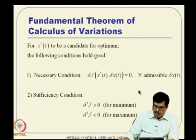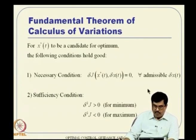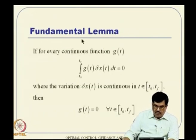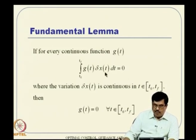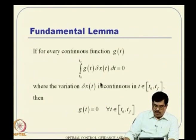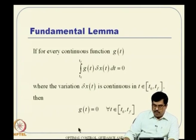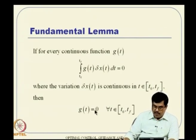We also discussed the fundamental lemma of calculus of variation, which states that for every continuous function g of t, if this integral equation is satisfied—where the variation delta x is continuous in t—then g of t has to be 0 in the entire interval. The proof was simple: we took an interval, constructed delta x as non-zero in that interval while g was assumed non-zero, which made the integral non-zero—a contradiction. Hence, g of t must be zero throughout. It looks a simple theorem but has great implications.